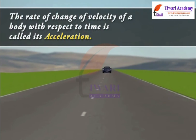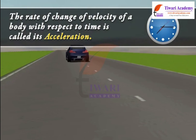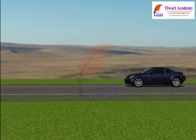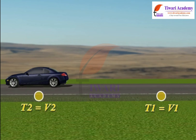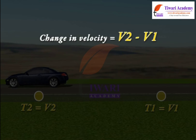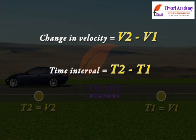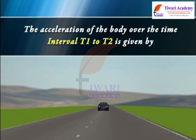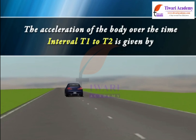The rate of change of velocity of a body with respect to time is called its acceleration. Let velocity of a body at time T1 be equal to V1, and velocity of a body at time T2 be equal to V2. Then change in velocity = V2 − V1, and time interval = T2 − T1. As per definition, the acceleration of the body over the time interval T1 to T2 is given by a = (V2 − V1) / (T2 − T1).